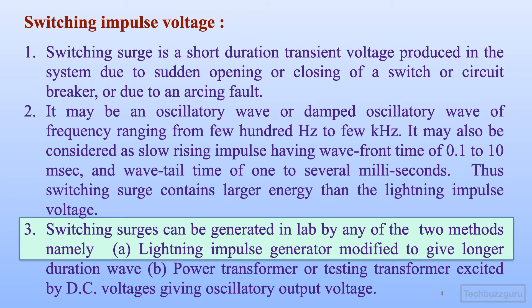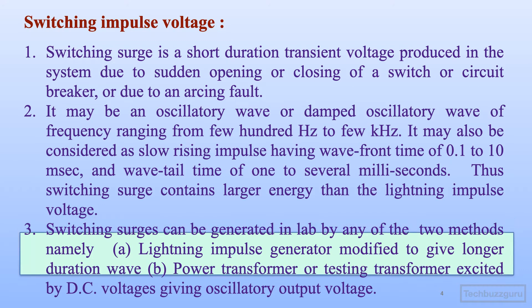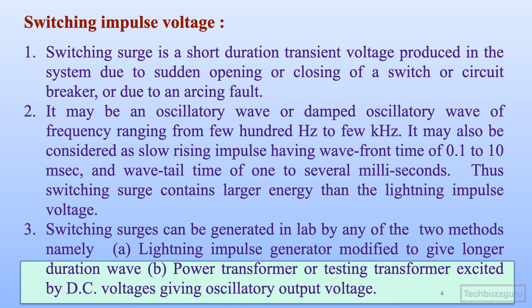Switching surges can be generated in the laboratory setup by any of two methods: first, by using lightning impulse generator modified to give a longer duration wave, and second, by using power transformer or testing transformer excited by DC voltages to produce oscillatory output.